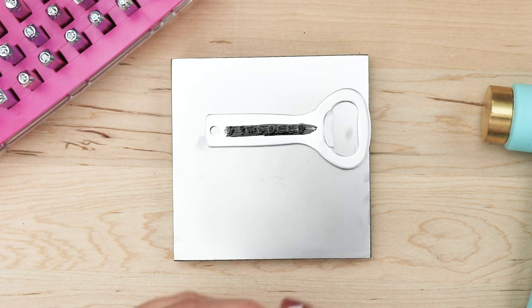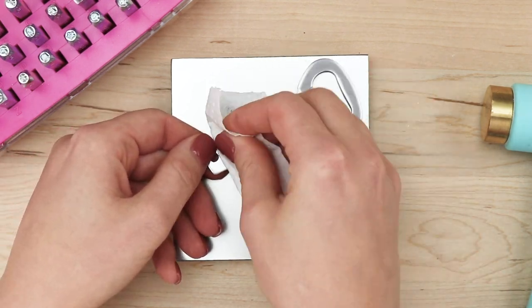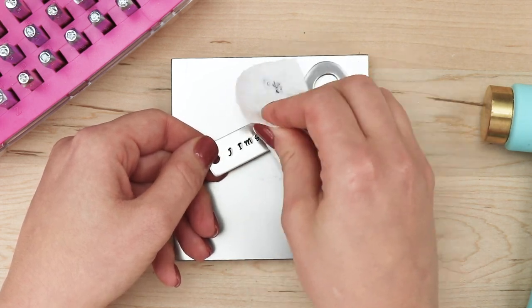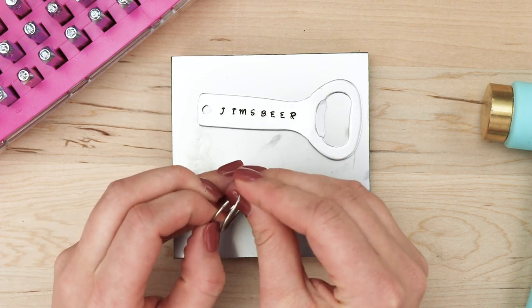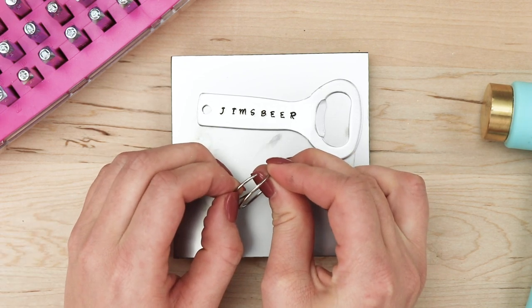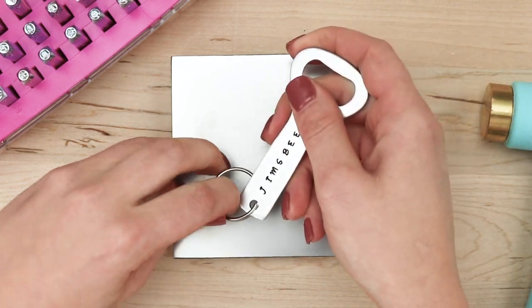Once dry, take a paper towel and lightly wipe away the excess enamel from the surface of the bottle opener. Once the enamel is removed, take a split key ring and lift the end up slightly with your fingernail. Slide the bottle opener onto the ring, then continue to turn the ring and slide the bottle opener until it's attached.